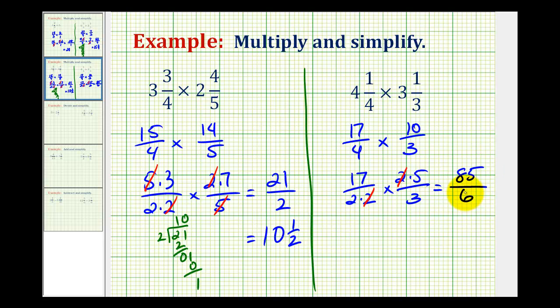And again, this fraction does not simplify because there are no common factors other than one between eighty-five and six. But again, this is an improper fraction, so let's go ahead and rewrite this as a mixed number, just in case you need to express your answer in that form.